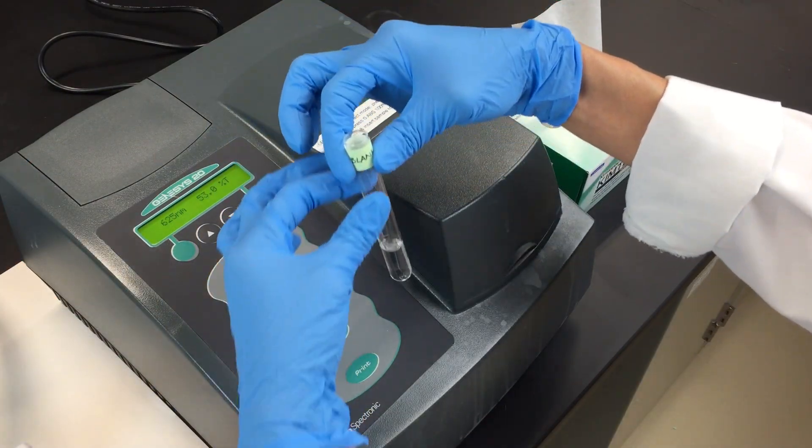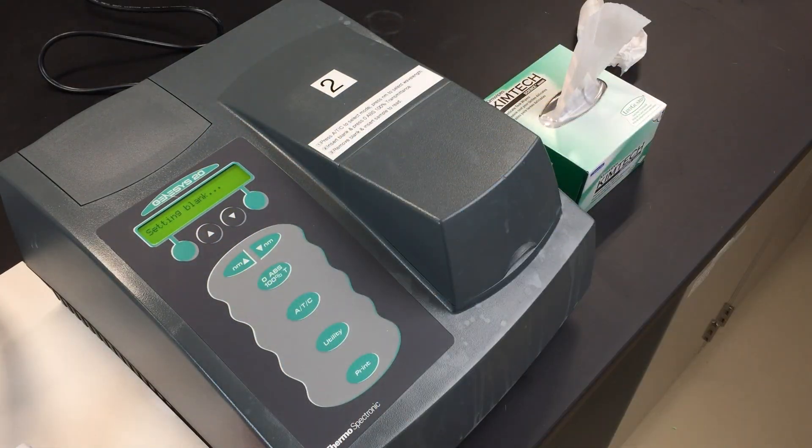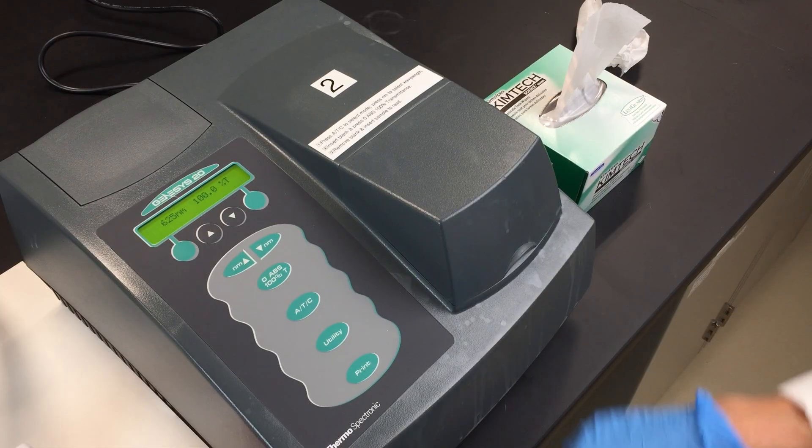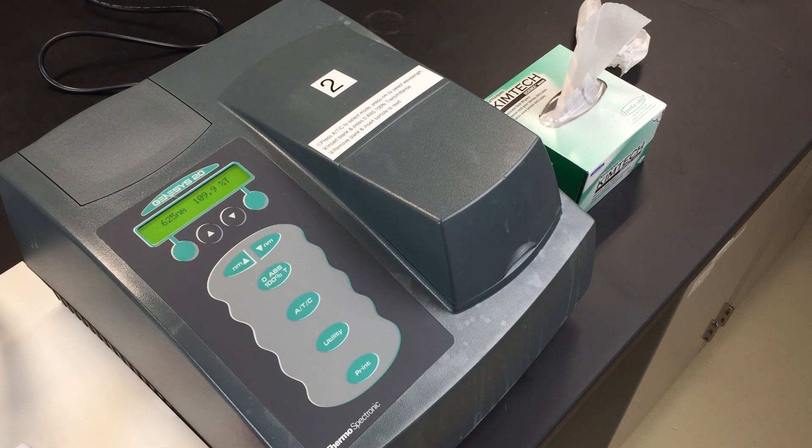Wipe any fingerprints off the blank tube and place it in the spectrophotometer. Press the 0 ABS 100% transmittance button to blank your spectrophotometer. Once you've blanked it, you don't have to do it again.